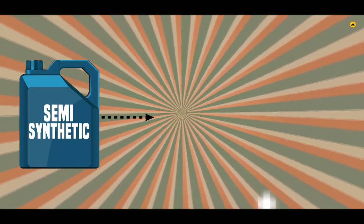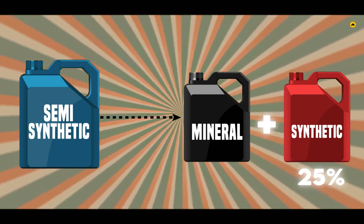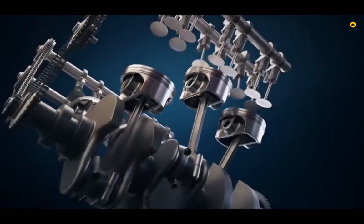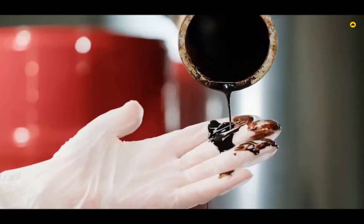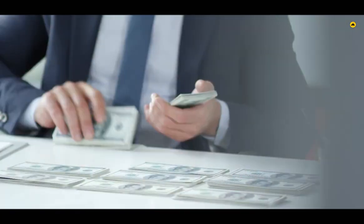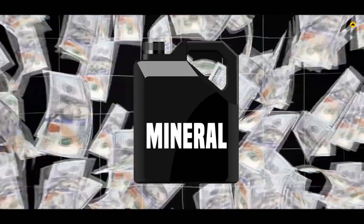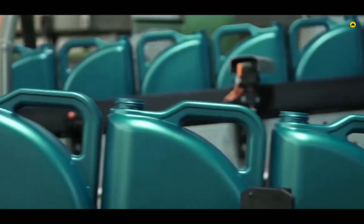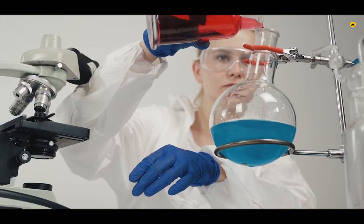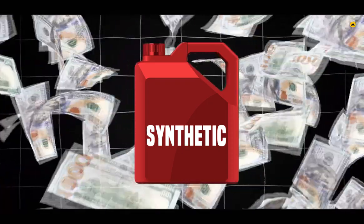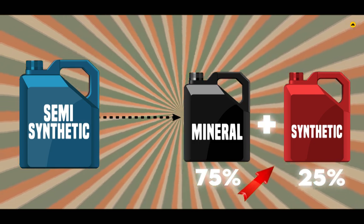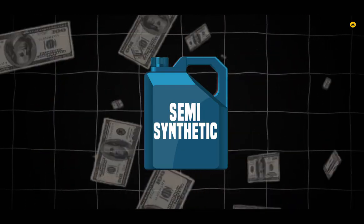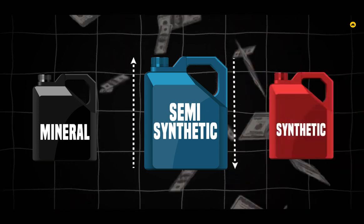The third type is semi-synthetic engine oil, which is a blend of mineral and synthetic engine oil, where 25% synthetic and 75% mineral engine oil is used. As a result, engine performance increases slightly and its price is much lower than synthetic engine oil but slightly higher than mineral engine oil. Mineral oil has lower production cost since it is made directly from crude oil with slight refining, while synthetic oil requires more refining and chemical processing, making it more expensive. Semi-synthetic therefore sits in between in price.